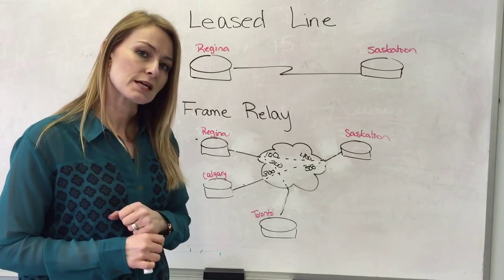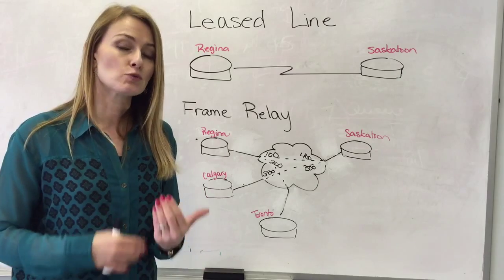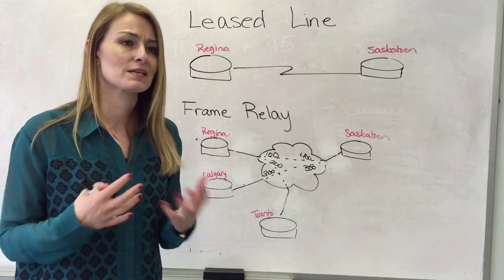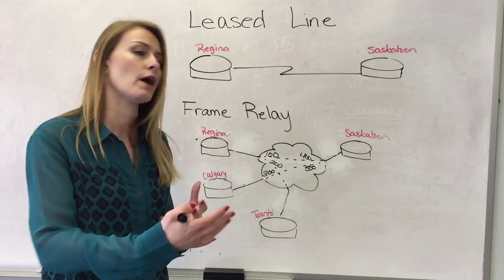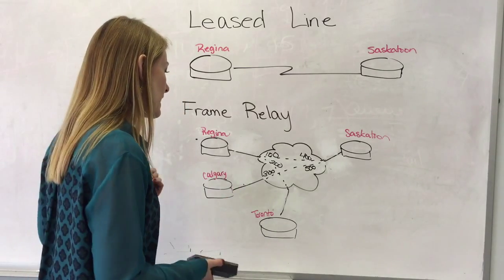Now when I said that these DLCIs are locally significant that allows us to have duplicate DLCI numbers because it's really only the device that it's going out on that cares about that number. So we could in fact have duplicates.